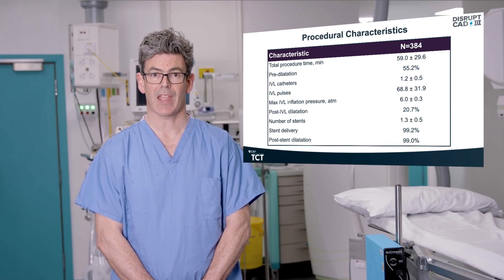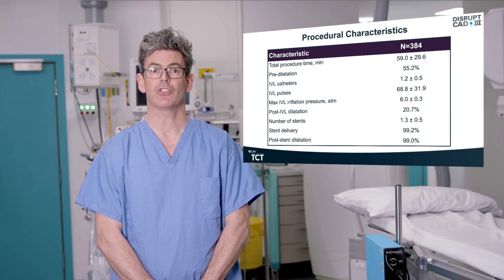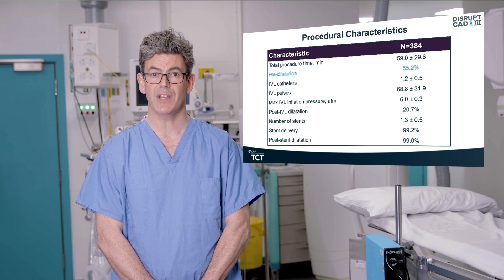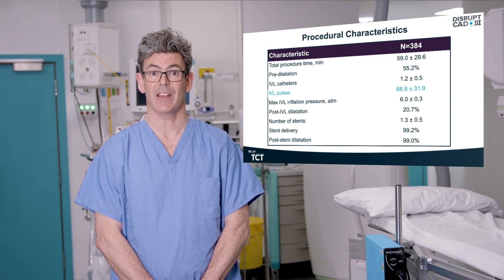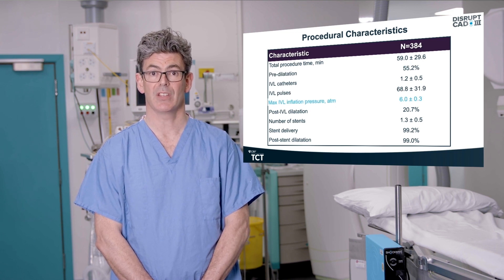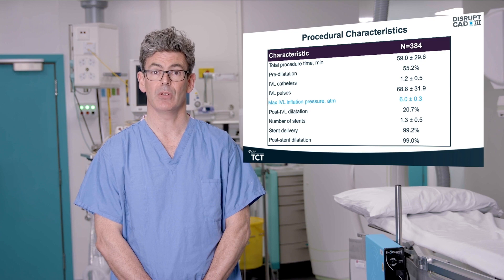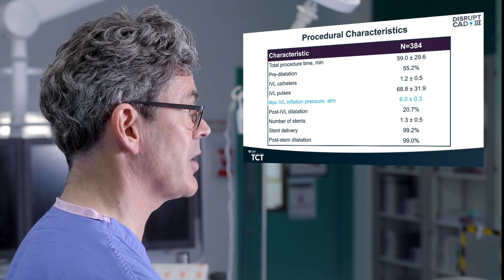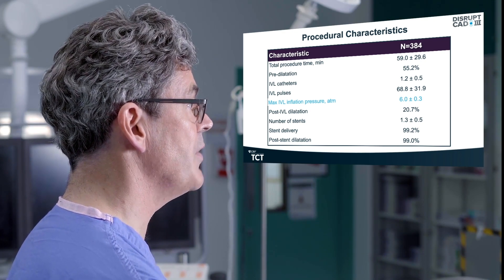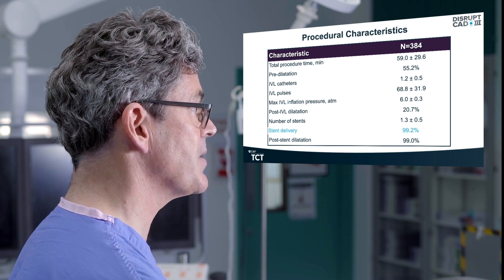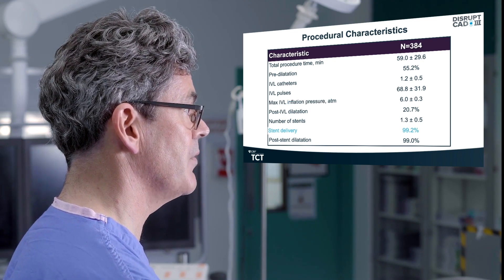The procedural characteristics show that 50% of targets were pre-dilated with a 2 mm or less balloon. An average of approximately 69 IVL pulses were administered per case, with a maximal IVL balloon inflation pressure of 6 atmospheres. Over 99% of stents were successfully delivered.